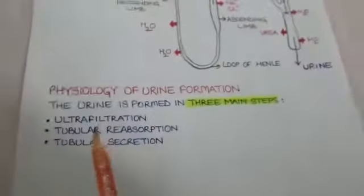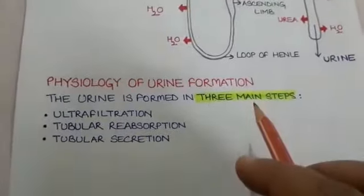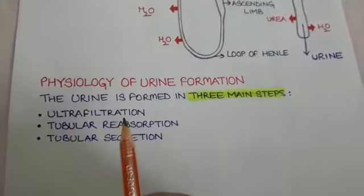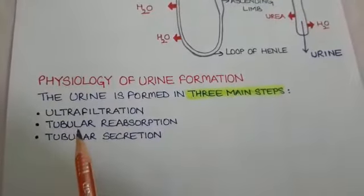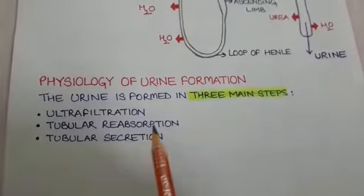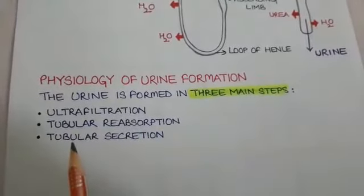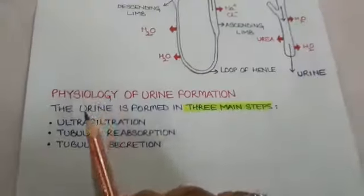Now let us understand the physiology of urine formation, which takes place in three steps. Number one: ultrafiltration. Number two: tubular reabsorption. And number three: tubular secretion.